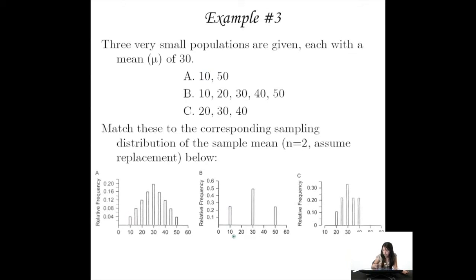Here you could also get a mean of 10, and here you could also, oh wait, no, here you can't get a mean of 10. There's no mean of 10 here. Okay, so A cannot possibly go with C.